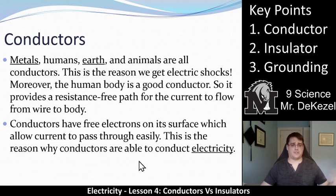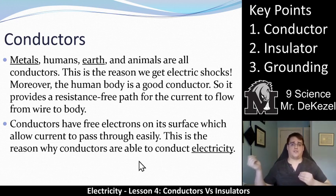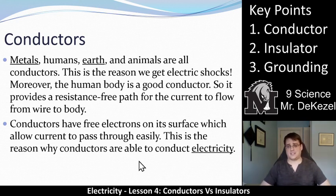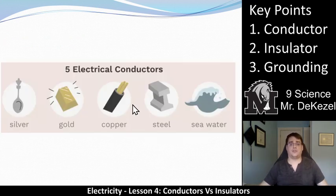So if you have a bunch of charges over here and you have a place where they want to get to over here, and you place a conductor between them, that will allow electrons to flow from one side to the other. If you place an insulator between them, electrons won't be able to flow. We often place a wire from one area to another to allow electricity to flow through it.